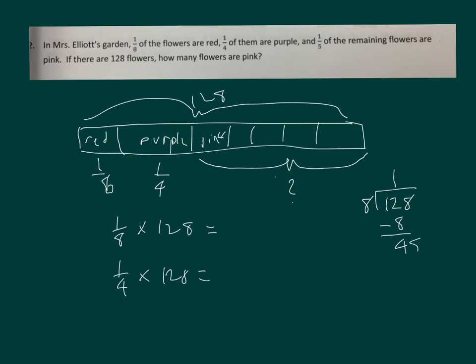12 minus 8 is 4. Bring down the 8. That's 16. 6 times 8 is 48. 48 minus 48 is 0. So 1/8 is 16. 1/4 of 128 is 32. It's twice as much as 1/8.